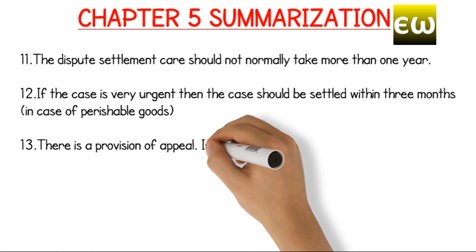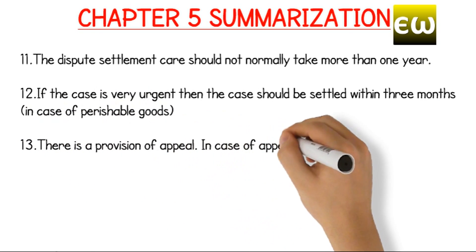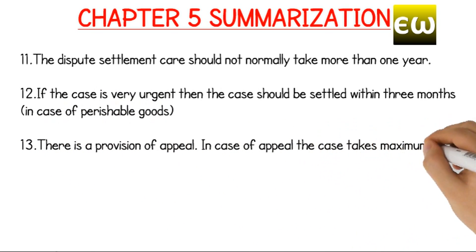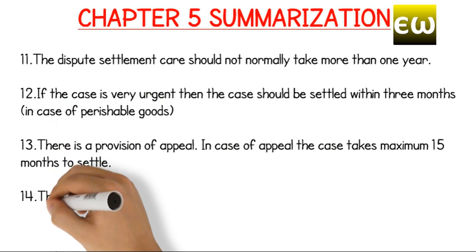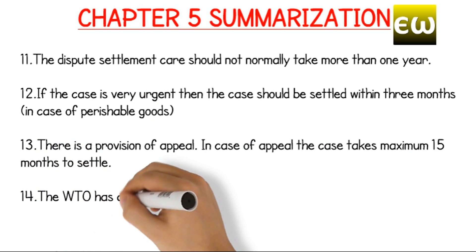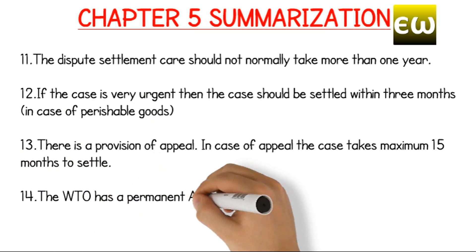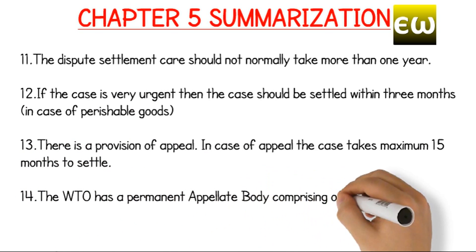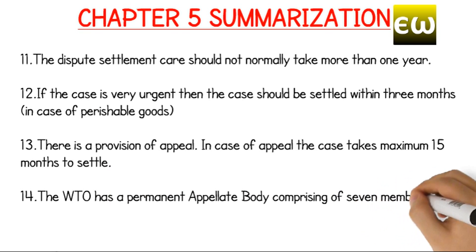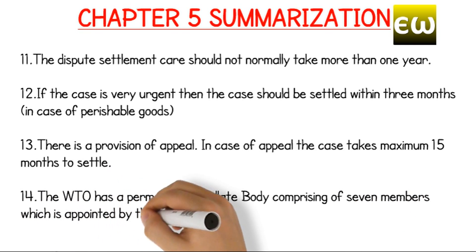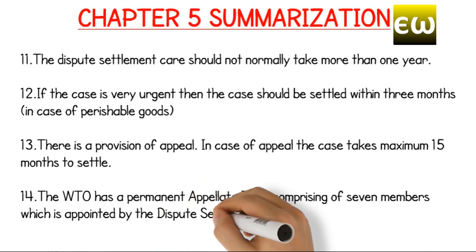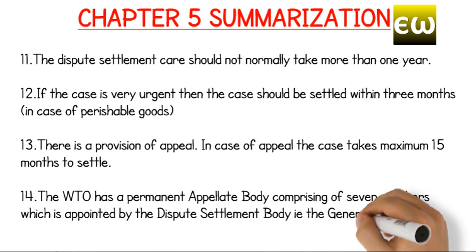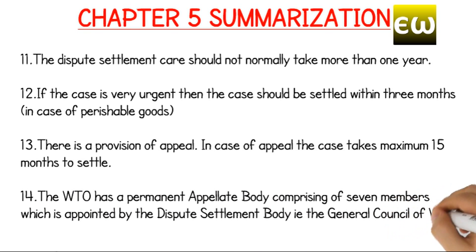There is a provision of appeal. In case of appeal, the case takes a maximum of 15 months to settle. The WTO has a permanent appellate body comprising seven members, which is appointed by the Dispute Settlement Body, that is the General Council of WTO.